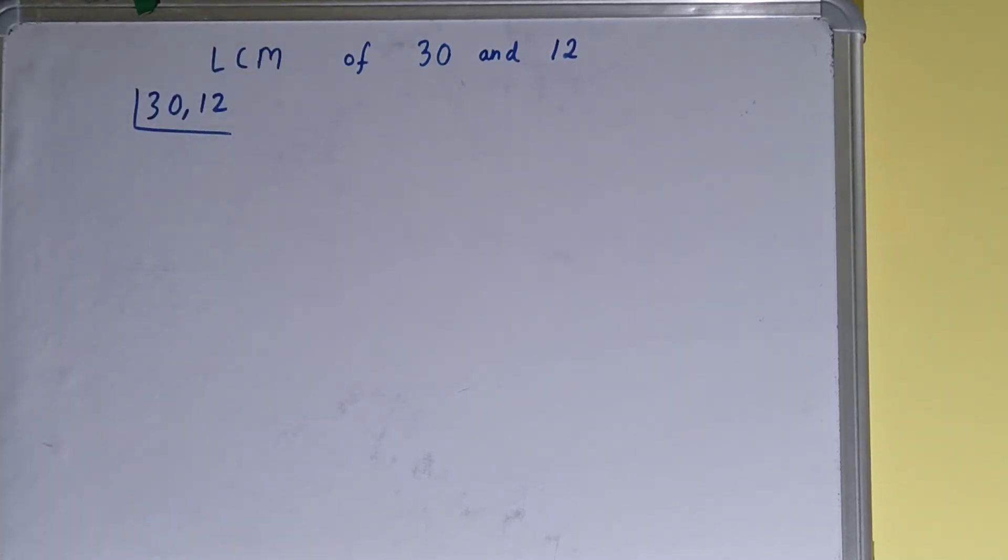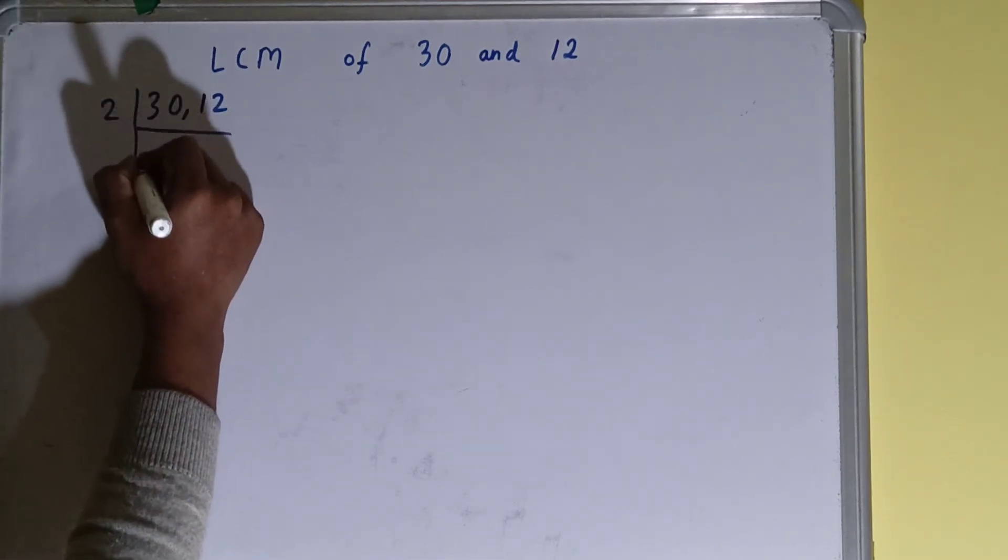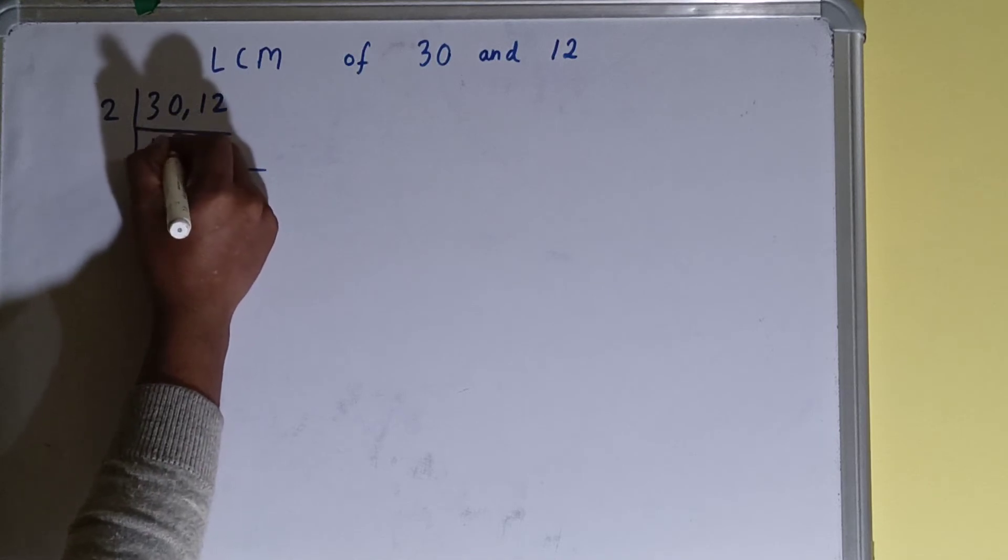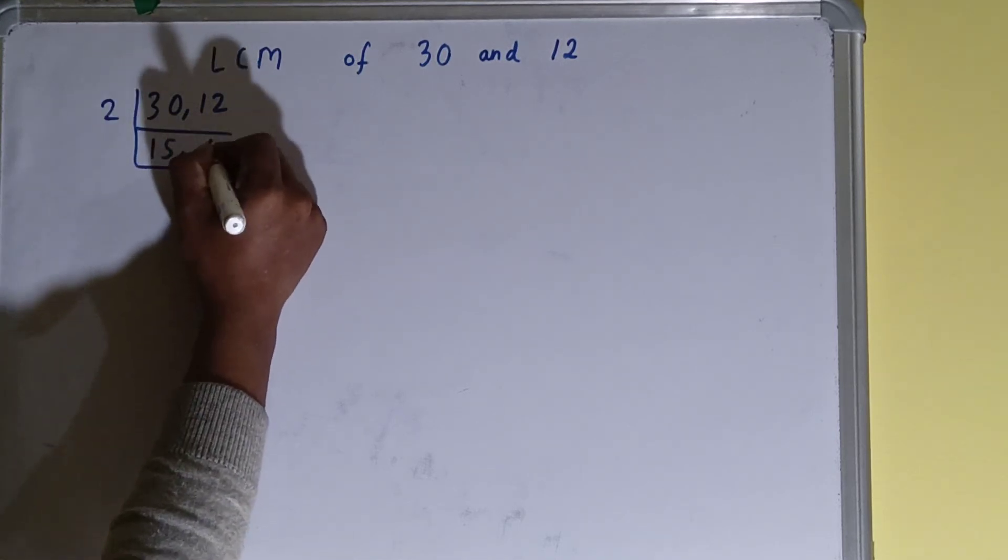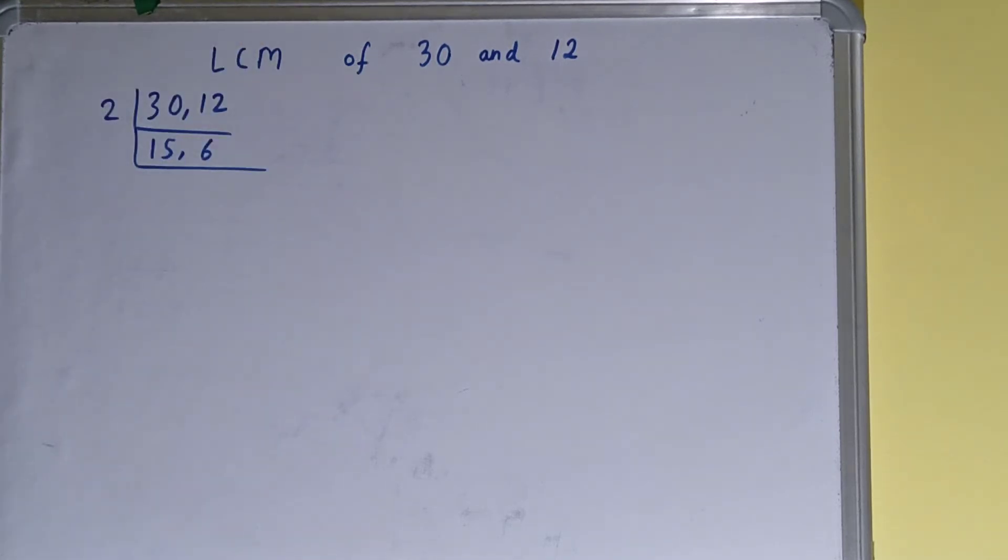The next thing we need to do is start with the lowest prime number, that is 2, and check if any of the numbers is divisible or not. If we check, both numbers can be divided by 2, so we'll divide. This 30 will become 15, this 12 will become 6.